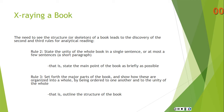The need when reading to see the structure or the skeleton of a book leads to the discovery of the second and third rules for analytical reading. Rule 2 states: you should be able to state the unity of the whole book in a single sentence, or at most a few sentences — a short paragraph. So you should state the main point of the book as briefly as possible. If you can't do that, you don't understand what the book is about.